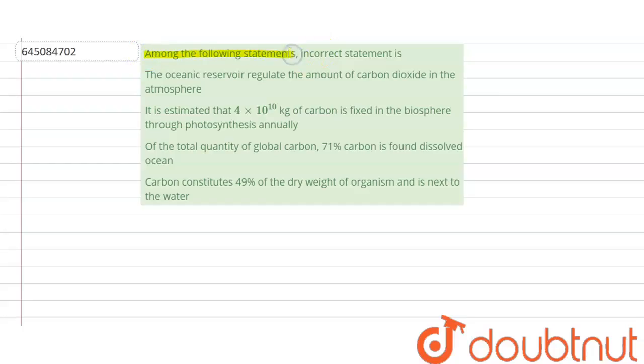Among the following statements, the incorrect statement is... Here four statements are given and we have to identify the incorrect statement. So let's discuss them one by one. First statement is: the oceanic reservoir regulates the amount of carbon dioxide in the atmosphere.